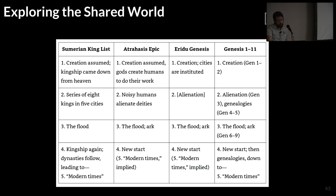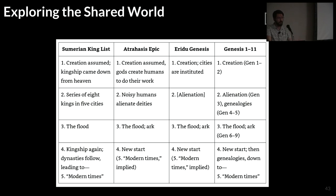Next, the Atrahasis epic: creation is assumed, the gods create humans to do their work, but the humans make too much noise, so the gods decide to send a flood. Atrahasis is selected — one of the gods, I think Enlil, says hey, the gods have told us there's going to be a flood, get a boat, get out of Dodge. He does, there's a new start, Atrahasis starts humanity over, and then modern times pick up. The Eridu Genesis is the same kind of thing: it narrates creation by the gods, they order the cosmos, cities are instituted, there's some missing text, humanity does something wrong — it's unclear — another flood, another ark, a new start from the survivors, and then modern times are implied.